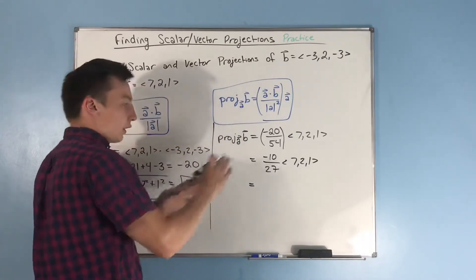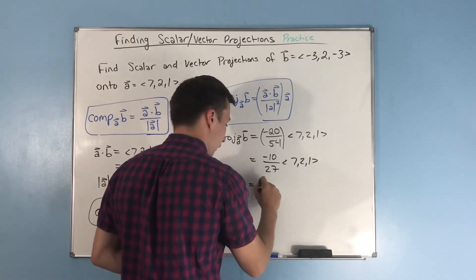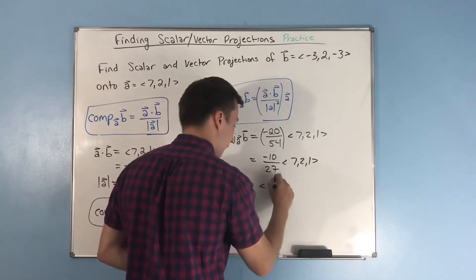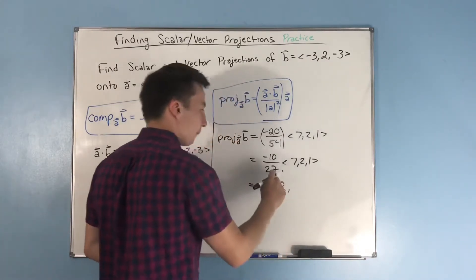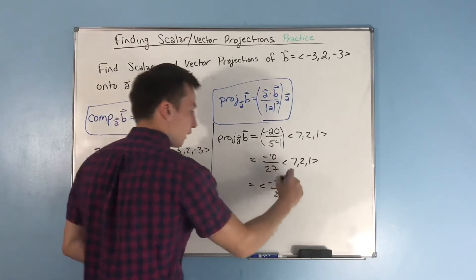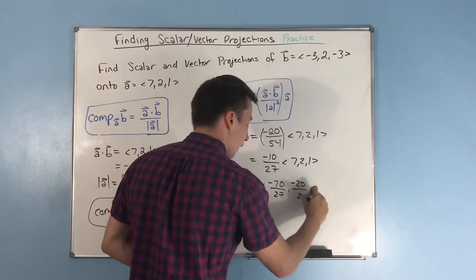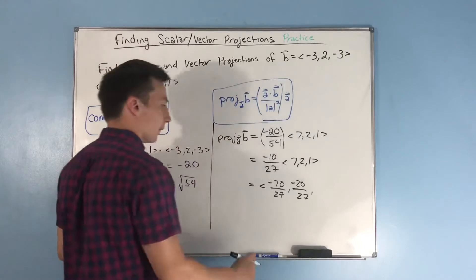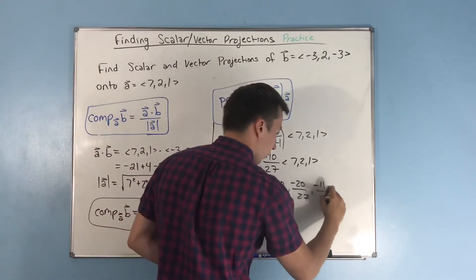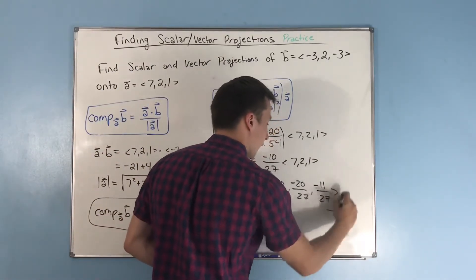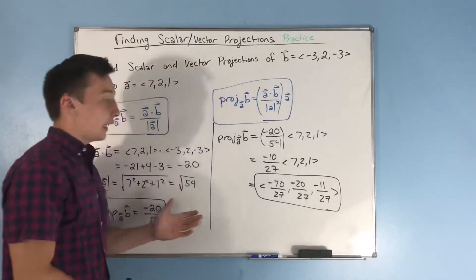Distributing this through, we get negative 70 over 27, comma negative 20 over 27, comma negative 10 over 27. And that is your projection of B onto A.